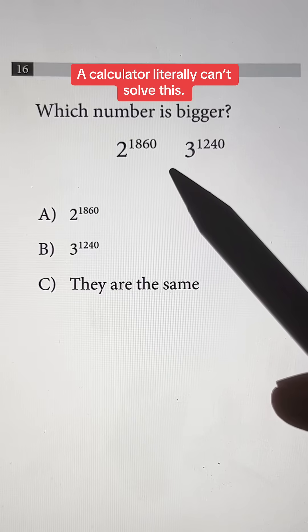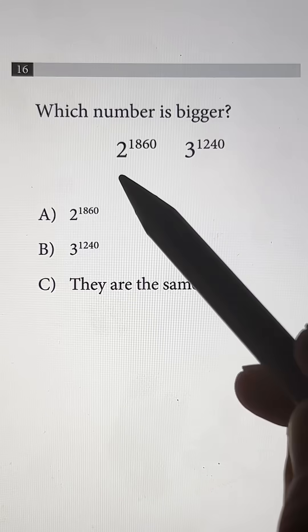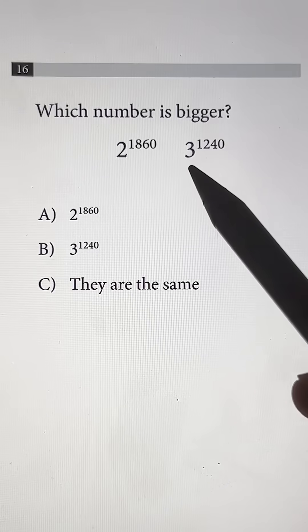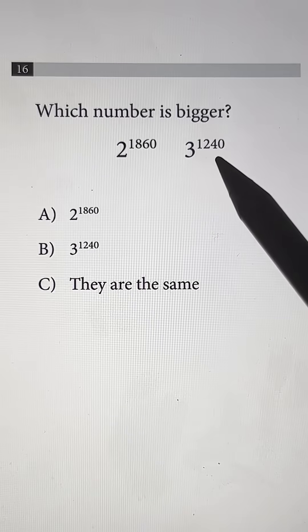This question is so outrageous, even a calculator can't solve it. Which number is bigger, 2 to the 1860th power or 3 to the 1240th power?